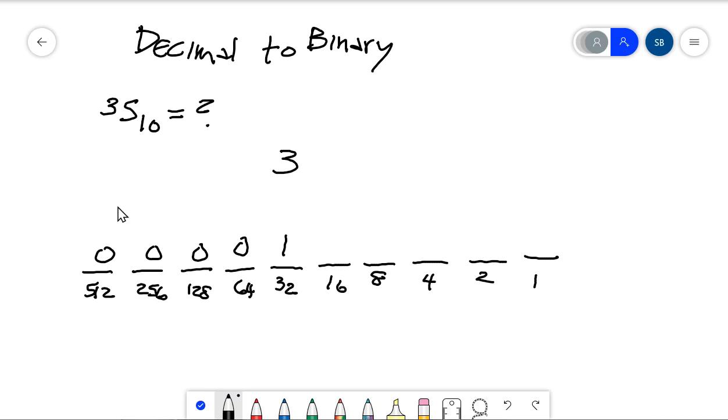So we start the same process over with the decimal value that we have remaining and that's 3. So I can't do 3 minus 16. I can't do 3 minus 8. That would be negative. I can't do 3 minus 4. That would be negative.